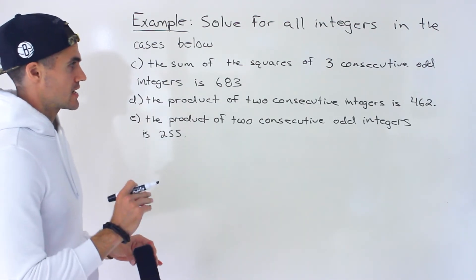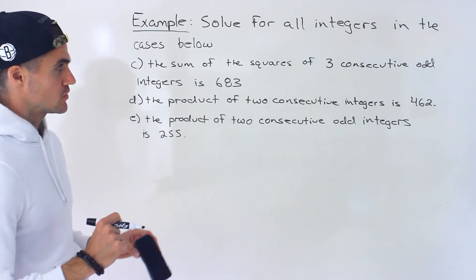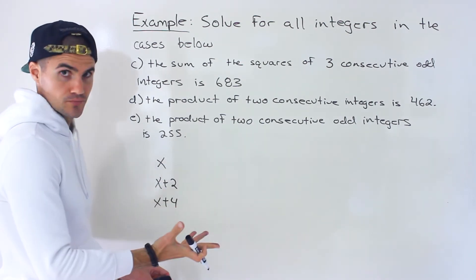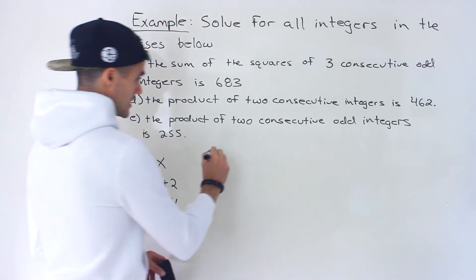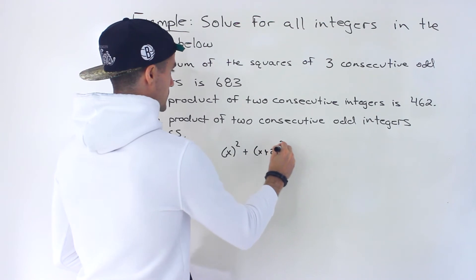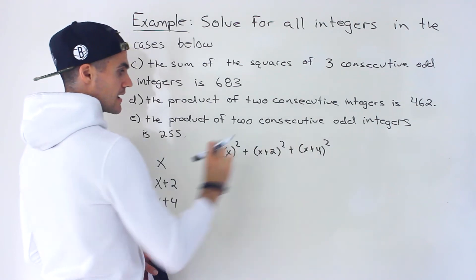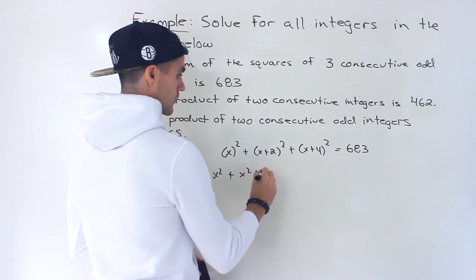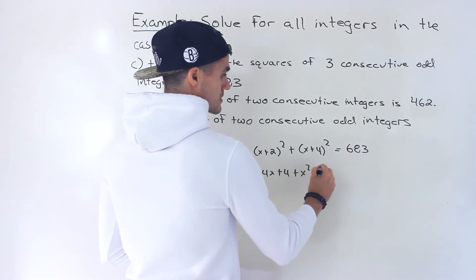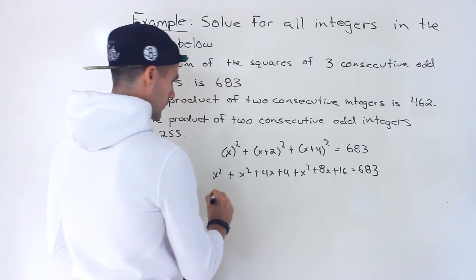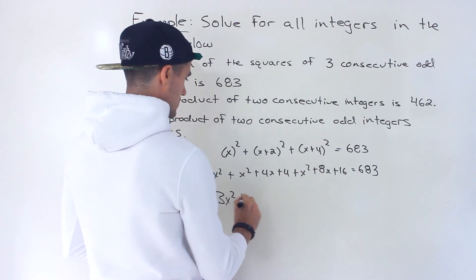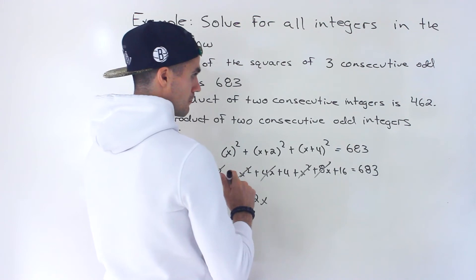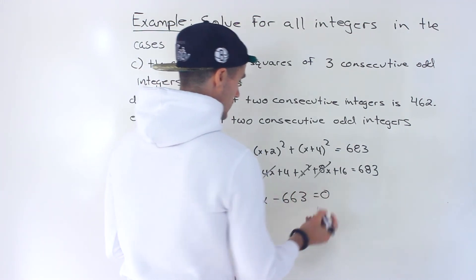Moving on to part c: the sum of squares of three consecutive odd integers is 683. As mentioned, whether you're working with consecutive even or odd integers, you represent them the same way — x, x plus 2, x plus 4 — because there's a difference of 2 between them. We square and sum them: x squared plus (x plus 2) squared plus (x plus 4) squared equals 683. Expanding and collecting: 3x squared plus 12x plus 20 equals 683. Bringing 683 over gives 3x squared plus 12x minus 663 equals zero.